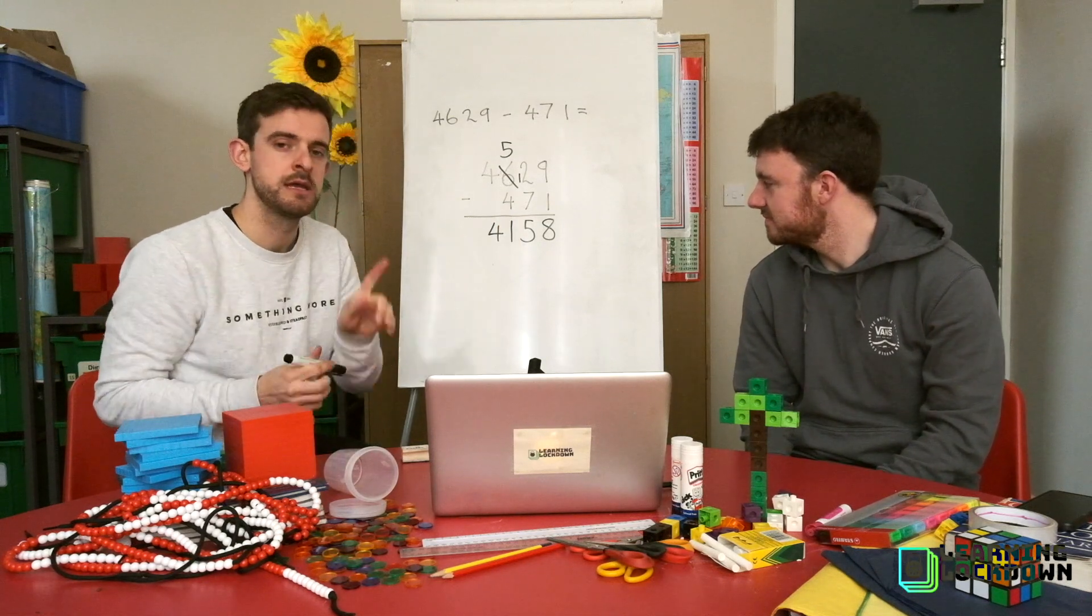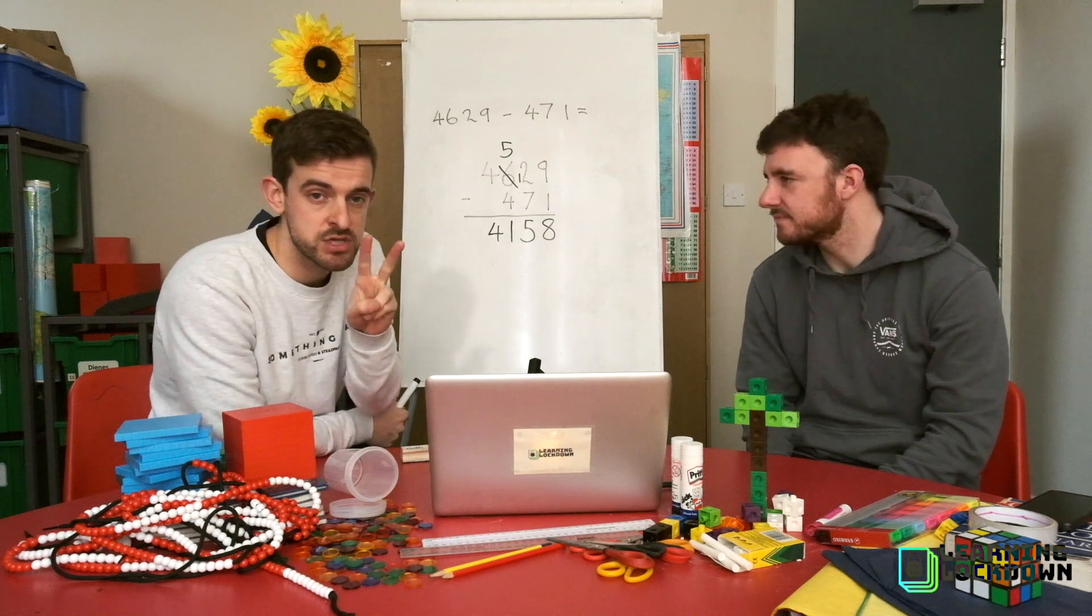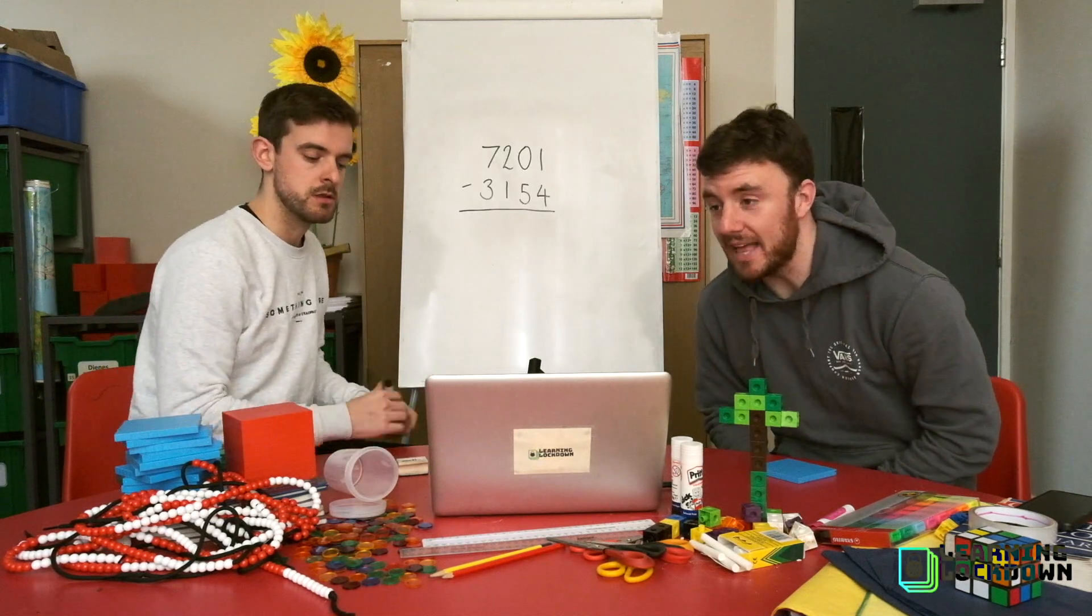And the thousands column, we've already got 4 thousands and we're taking away nothing. So 4,000 take away nothing still leaves us with 4,000. 4,158. So you have to do at least one level of regrouping here. That is level 2. Off you go. Time to level up.